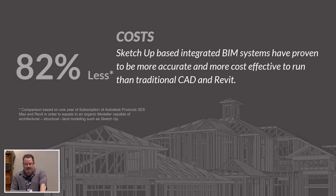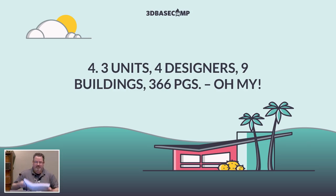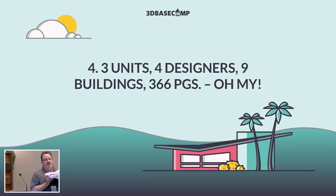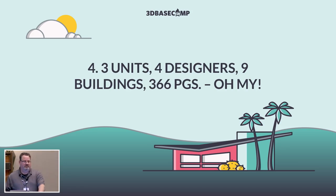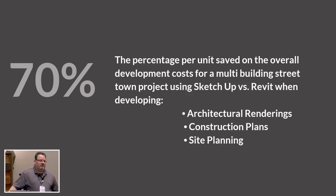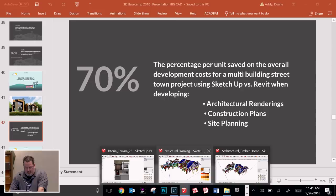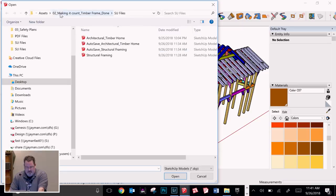This next project is nine buildings — a mix of three-unit and four-unit projects — with 366 pages of drawings, and it's 100% done in SketchUp except for the landscape architects. By doing that we were able to show our company a 70% cost reduction per door in terms of development costs.